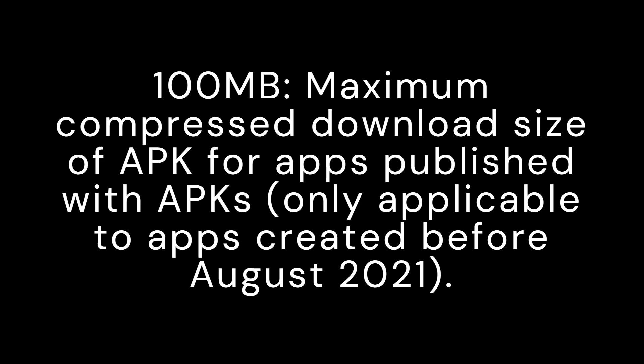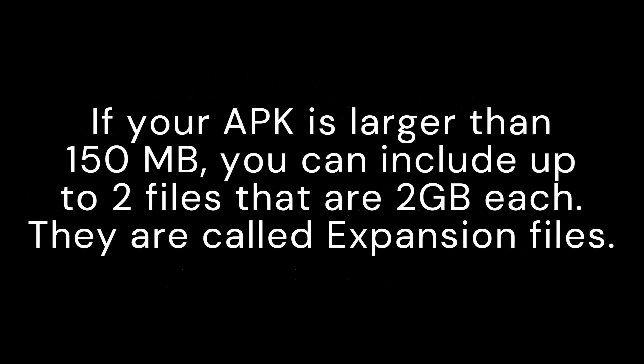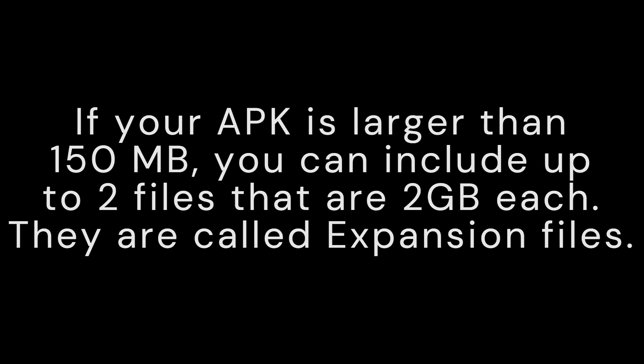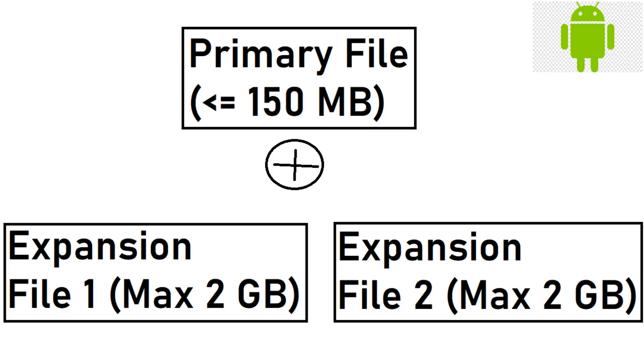If your APK is larger than 150 megabytes, you can include up to two files that are 2 gigabytes each. They are called expansion files. The APK is the initial download from the store, which is a primary file that has the primary assets, and then the APK will need to be programmed to download the other two, or one, expansion file. Essentially, expansion files are additional files that can be uploaded and downloaded from Google Play alongside your APK file.